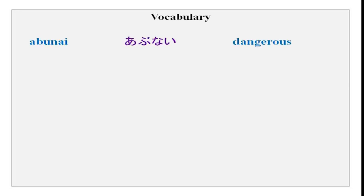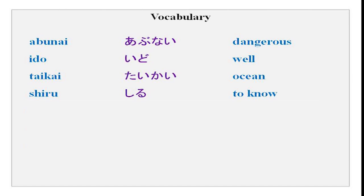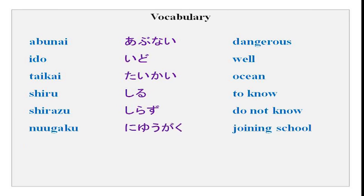Vocabulary: abunai means dangerous. I is a well, taikai is ocean or a water body, shiru is to know and shirazu means do not know. Nyugaku is joining school and shiki is the ceremony - going to school is a big thing in Japan. In April children join school and their parents give them many good things. Kawazu is a frog.